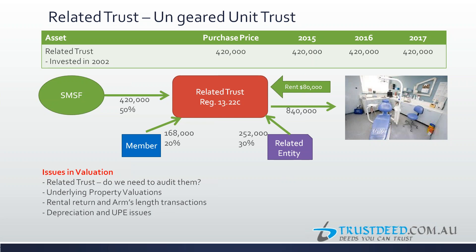As an auditor, how far do you go? You should audit the related trust as well to know who the other unit holders are and why the underlying property hasn't been revalued. You'd also want to conduct a valuation and title search on the property. It's possible that although there was no borrowing at the time of purchase, the property was later refinanced. The audit should extend to related trusts, and title searches should cover not just properties directly owned by the super fund but also properties owned by related trusts.